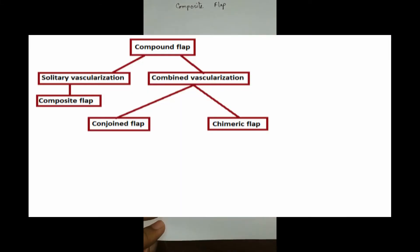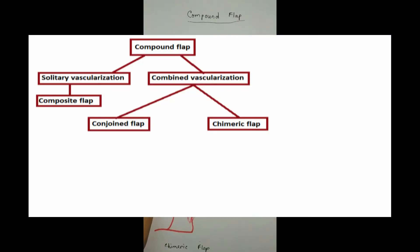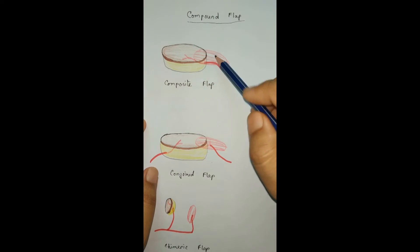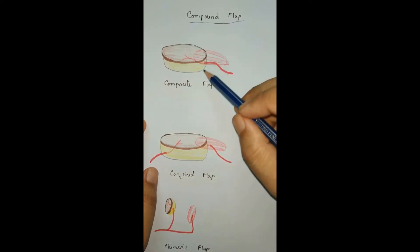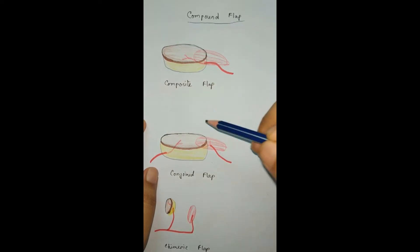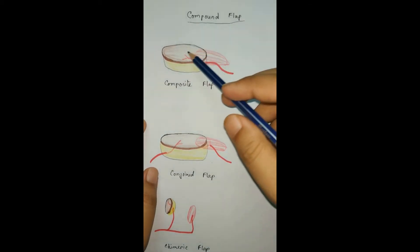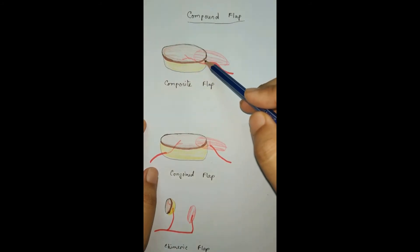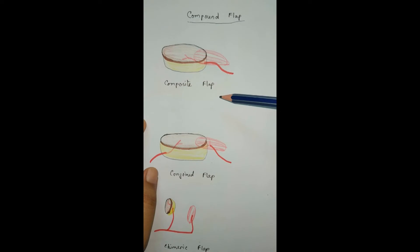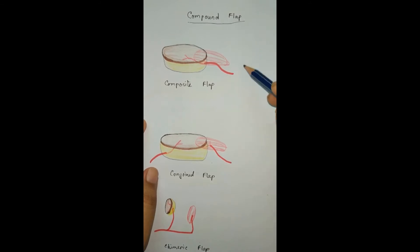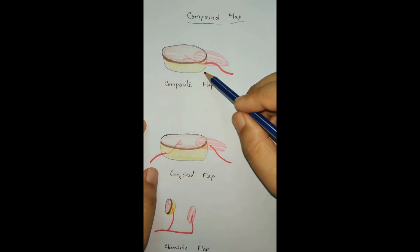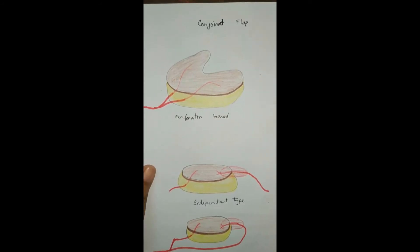The composite flap has a single blood supply and its components are dependent on each other — that is, its components are intact. If we want to transfer the composite flap, we need to elevate all the components together as a whole and transfer it. Most myocutaneous or septocutaneous flaps are composite flaps because we elevate the skin with muscle or fascia as an intact unit, since the skin is dependent on the perforator arising from the muscle or fascia.